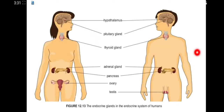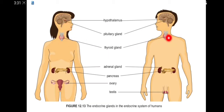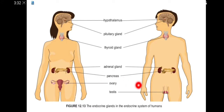This figure shows the endocrine glands in the human endocrine system. Here is the hypothalamus in the brain, the pituitary gland below the hypothalamus, the thyroid gland, the adrenal gland, the pancreas, the kidney, and the ovary for women and testes for men.